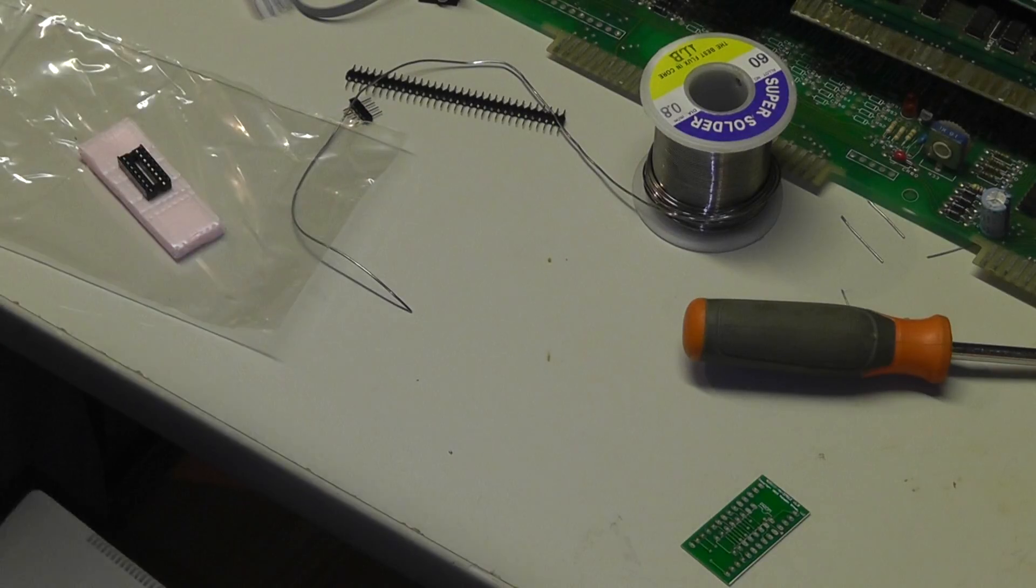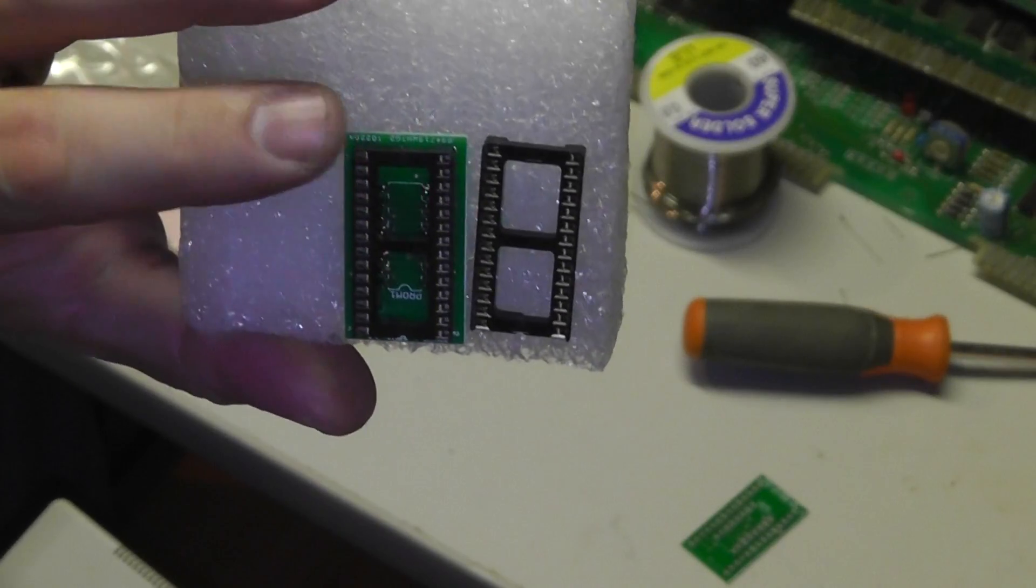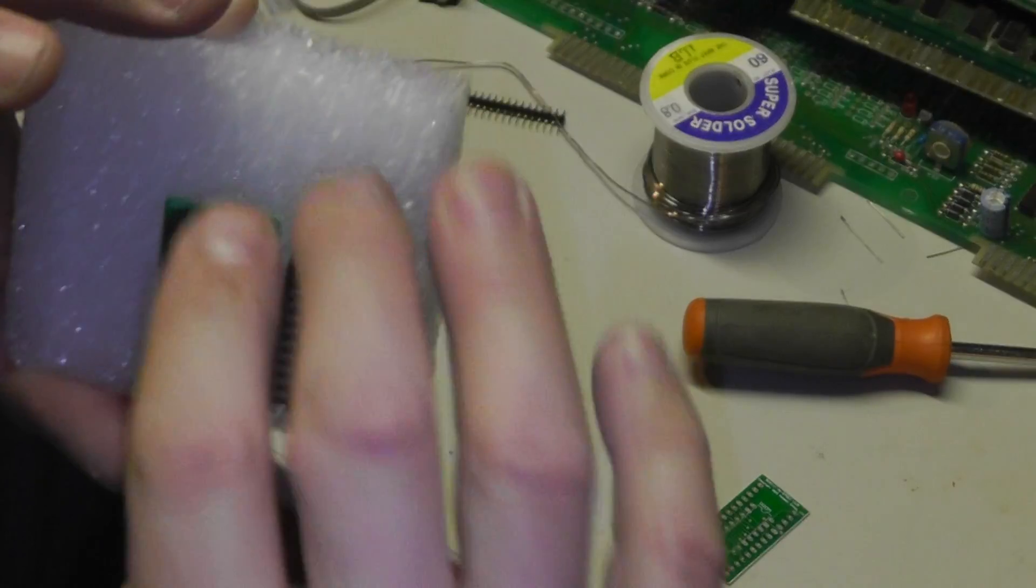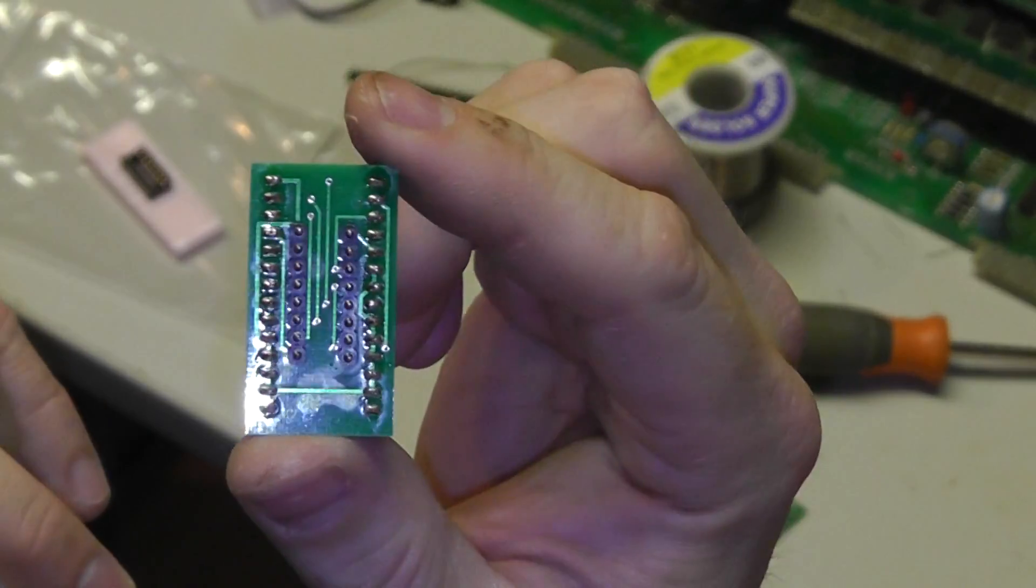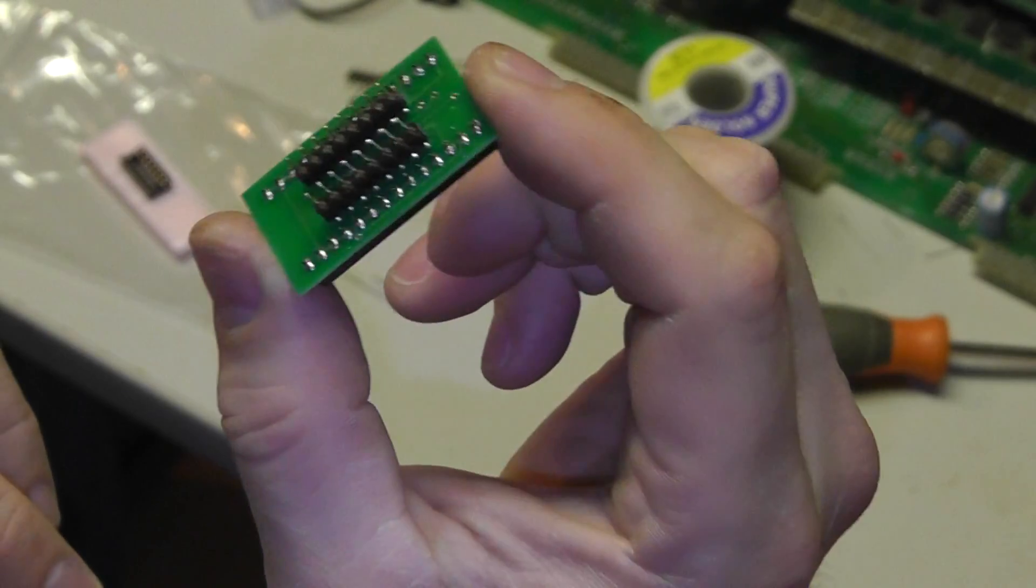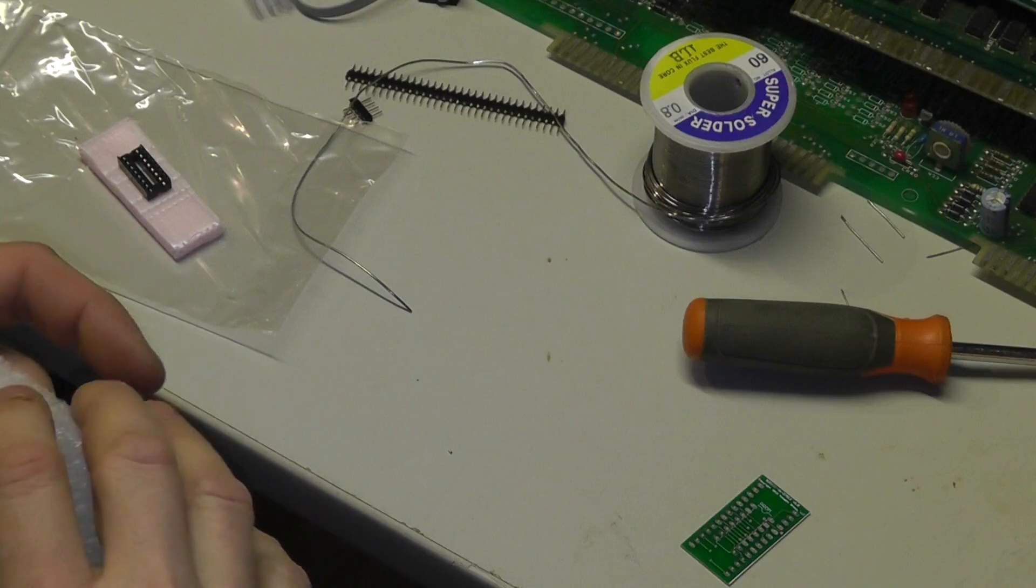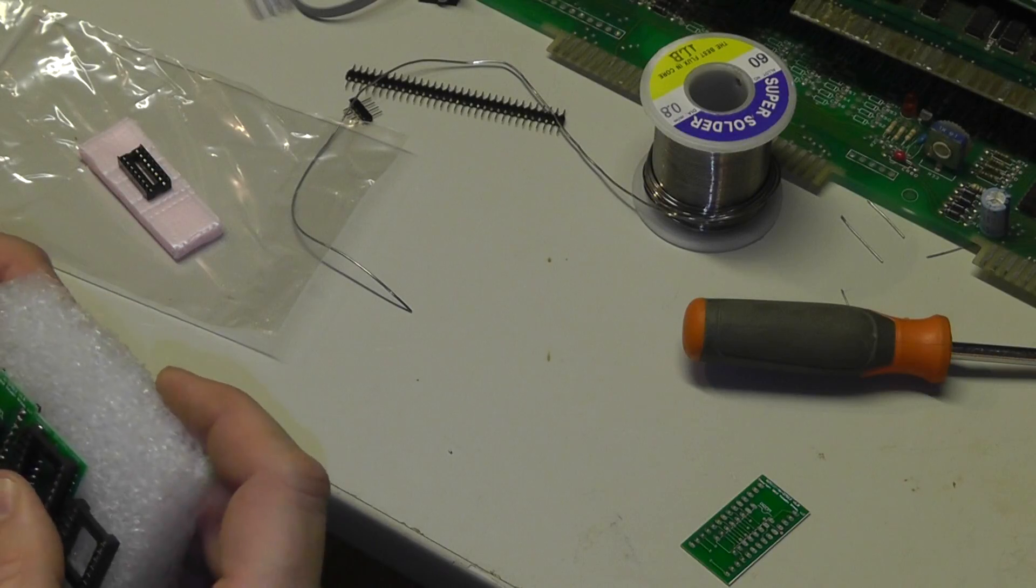And then the other one I put together was to replace potentially a bad PROM on one of the boards. So it's like, what, 24-pin, I guess, on this side. And then the 16-pin on the bottom. Like that. So, I just put two together and then I was like, you know what, this might be a good video series of me actually using these for something.